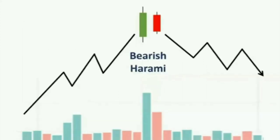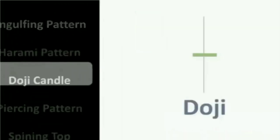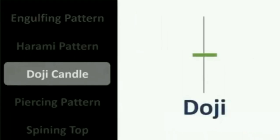The next candlestick pattern is the bearish harami pattern. This is a bearish reversal pattern where the uptrend in the market is converted back to the downtrend. Again, the volume near these two candles has to be huge compared to the average volume for this pattern to be considered strong and significant.